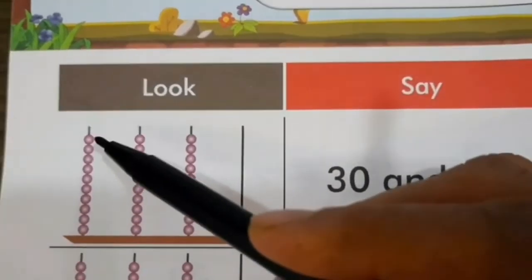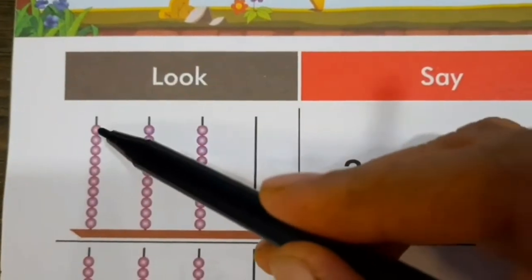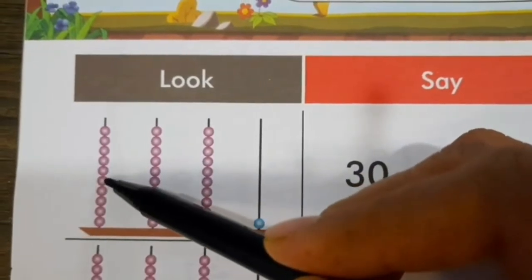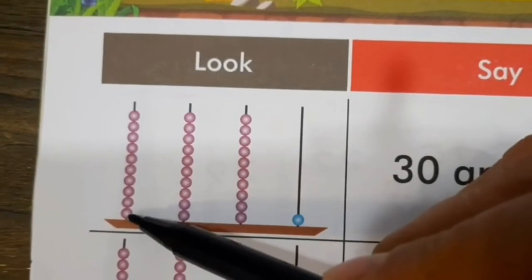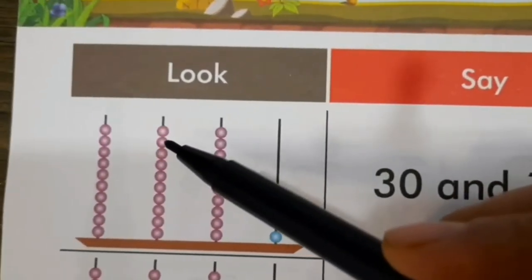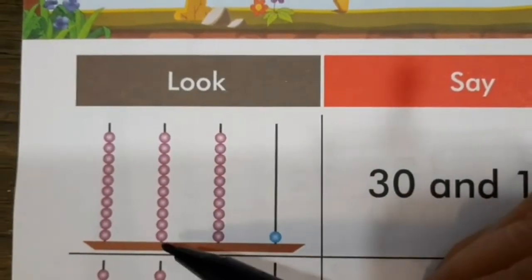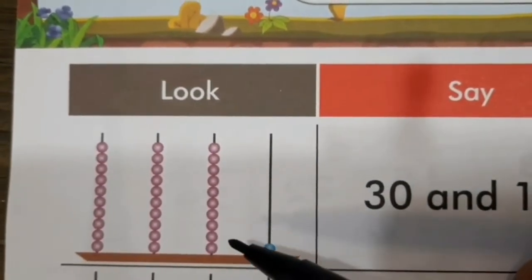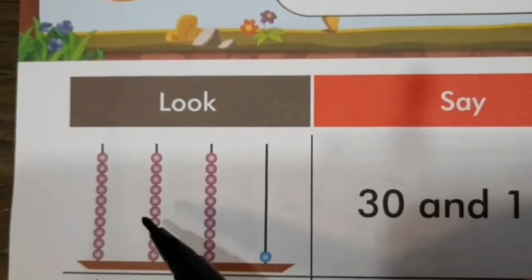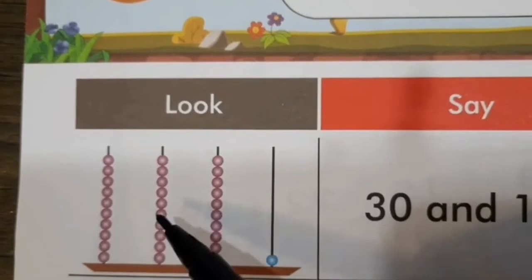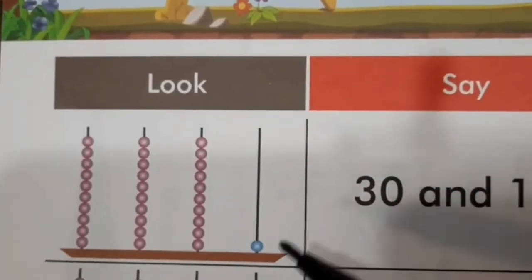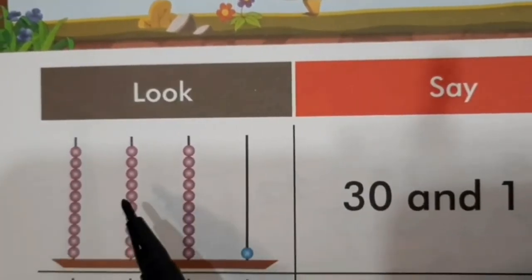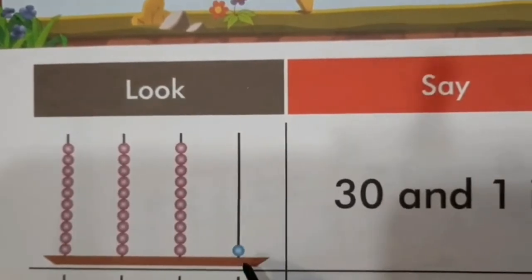We have 10 beads in a row. So, let's count: 1, 2, 3, 4, 5, 6, 7, 8, 9 and 10. Similarly, we have another 10 beads in this line and one more line with 10 beads. So, in total, we have 30 beads in 3 lines, and in the fourth one, we have only one. So, we have 10, 10, 20, 30 and one more. So, 31.